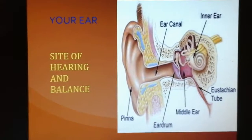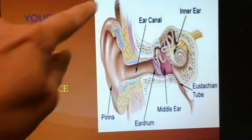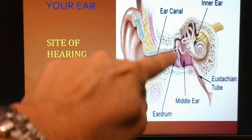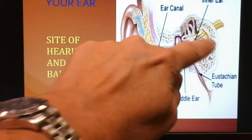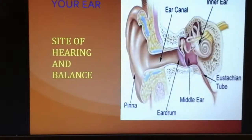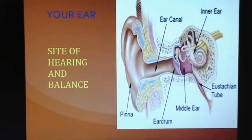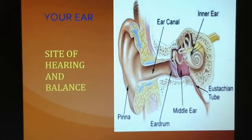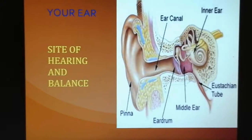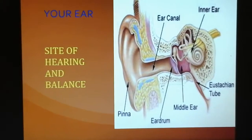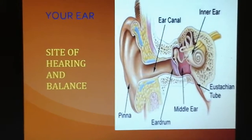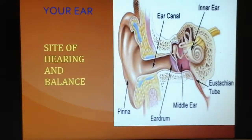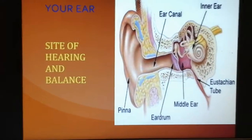Your ear divides into three parts: the outer ear, the middle ear, and the inner ear. Since your ear is responsible for your sense of sound and your sense of balance, we're going to do the sense of sound first because it's kind of a chain reaction — this will vibrate, which causes that to vibrate, and so on. Then we'll talk about your sense of balance after that.